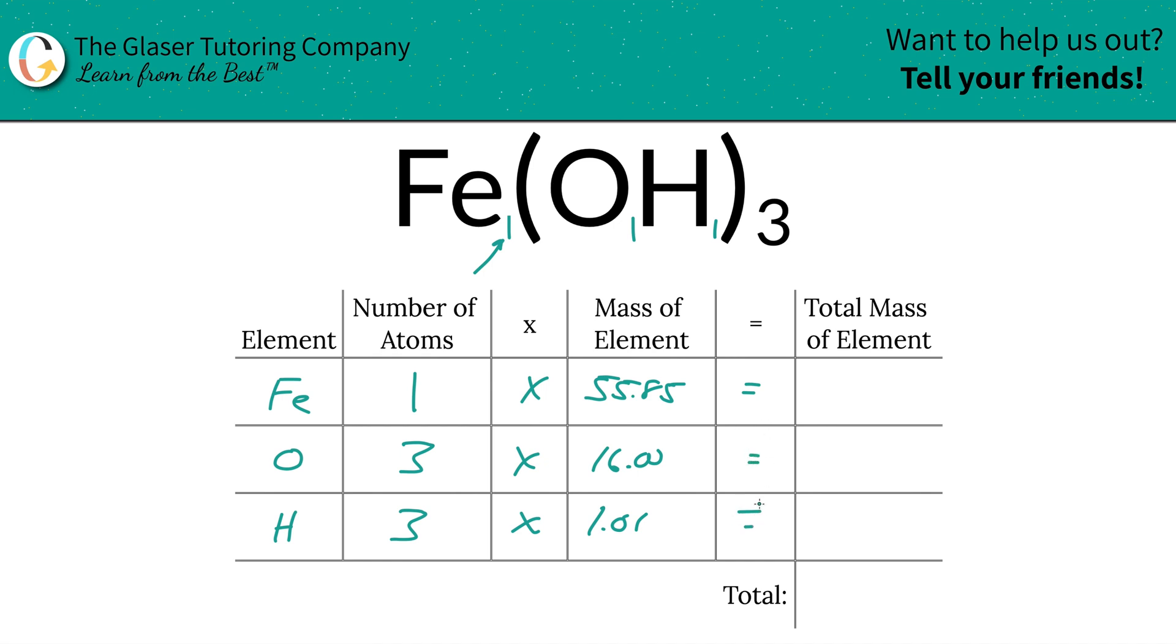Then we have 16, and then we have 1.01. All right, those masses can either be an AMU or gram per mole, depending upon if you're calculating molecular mass or molar mass.